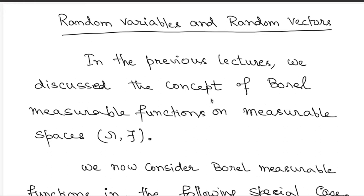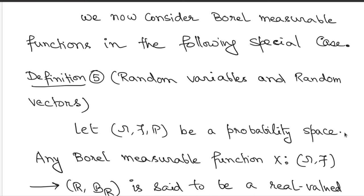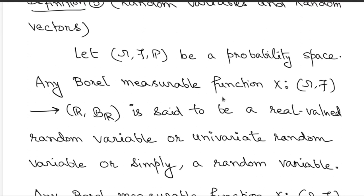In the previous lectures we discussed the concept of Borel measurable functions on a measurable space. We fix the measurable space beforehand and then talk about Borel measurable functions, be it real valued, extended real valued, or R^d valued. Now we are going to consider these Borel measurable functions in a very specific format. We look at Borel measurable functions X from a measurable space to the real line. In addition to the measurability structure, there should be a probability measure available on the domain side, so the domain side is actually a probability space.